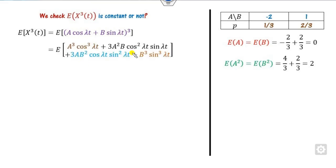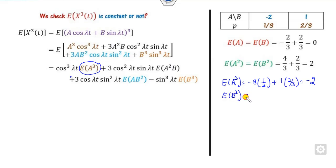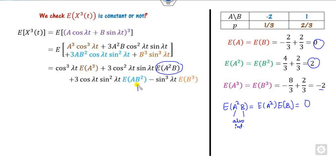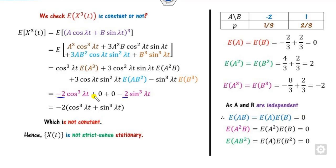For E[X³], expand (A + B)³ = A³ + 3A²B + 3AB² + B³. Taking expectation: E[A³] = (−8)(1/3) + (1)(2/3) = −2. E[B³] = −2 similarly. For E[A²B]: since A and B are independent, A² and B are also independent, so E[A²B] = E[A²]·E[B] = 2·0 = 0. The same holds for E[AB²] = 0. Substituting all values, E[X³(t)] involves a term depending on t, which is not constant. Therefore this process is NOT a strict sense stationary process.